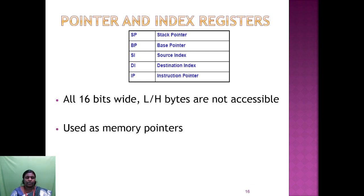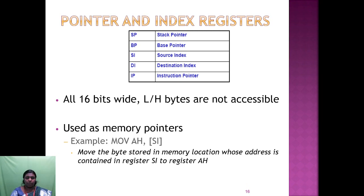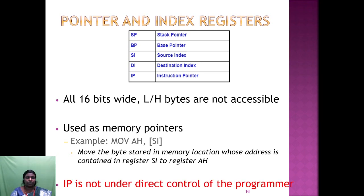For example: MOV AH, [SI] — here we are going to access the memory where the pointer is. SI is the source index; we move the byte stored at the memory location whose address is contained in register SI to register AH. IP is not under direct control of the programmer because the instruction pointer is a control register.